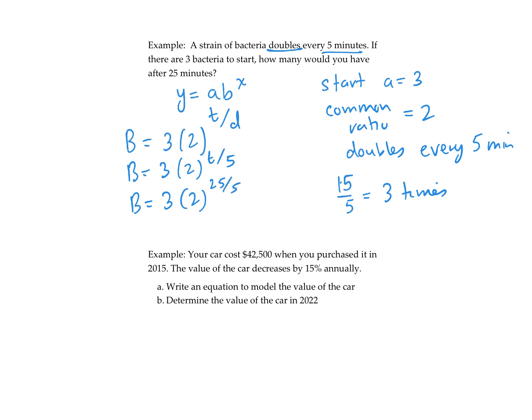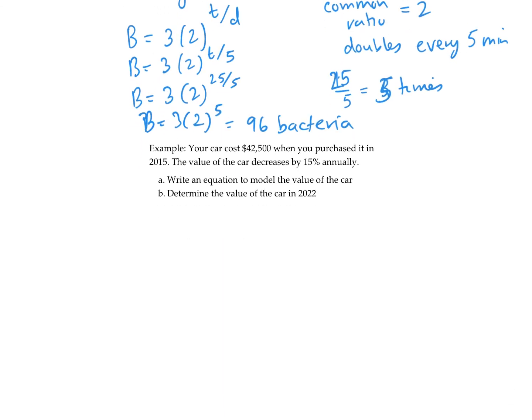We want to know the bacteria at 25 minutes, so t is 25. That means it's going to double five times. 25 divided by five equals five doublings. So 2 to the power of 5 is 32, multiply that by 3, and we have 96 bacteria. Sometimes you have to consider a doubling period or half-life.